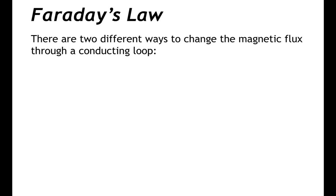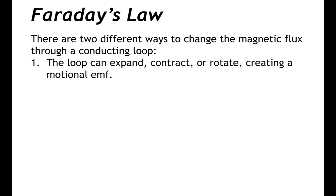There are two different ways to change the magnetic flux through a conducting loop. The first way is that the loop can expand, contract, or rotate. This would create a motional EMF.